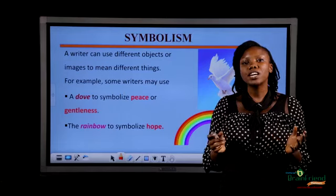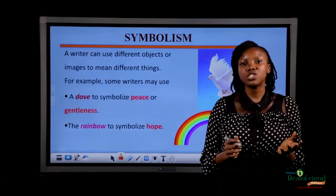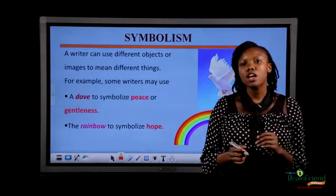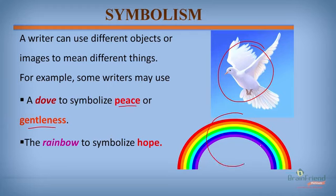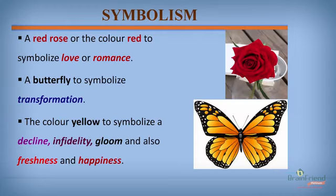A writer can use different objects or images to mean different things. For example, a writer can use a dove to symbolize peace or gentleness. A writer can also use a rainbow to symbolize hope. A writer can also use a red rose to symbolize love or romance. Also, a writer can use a butterfly to symbolize transformation.